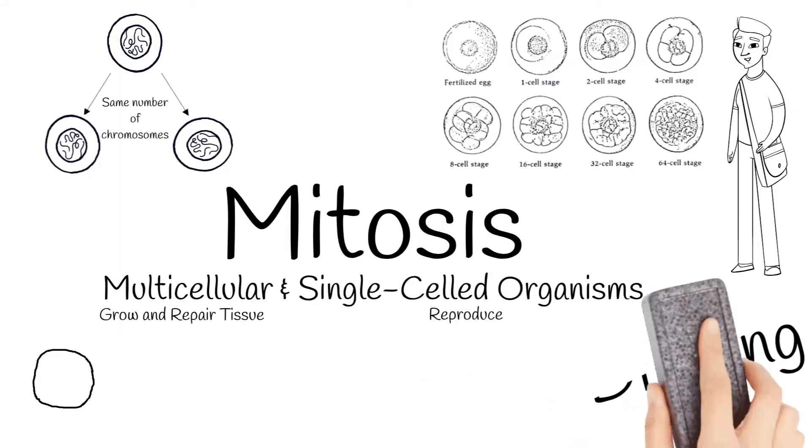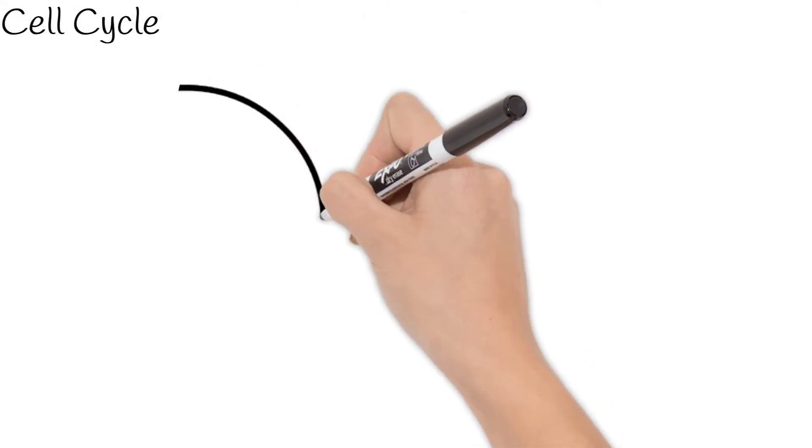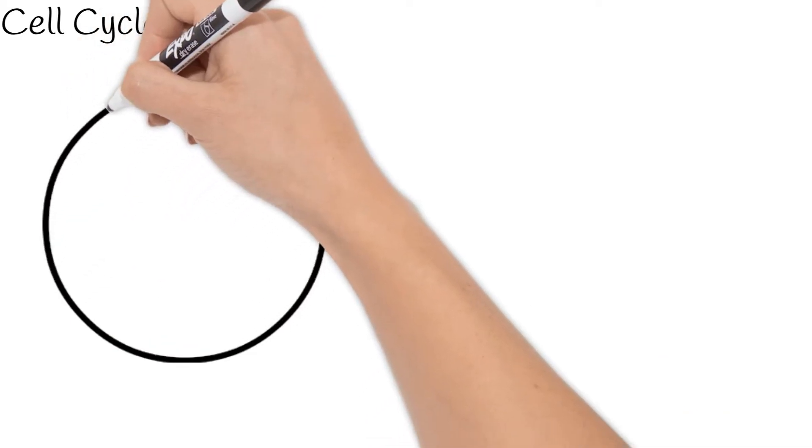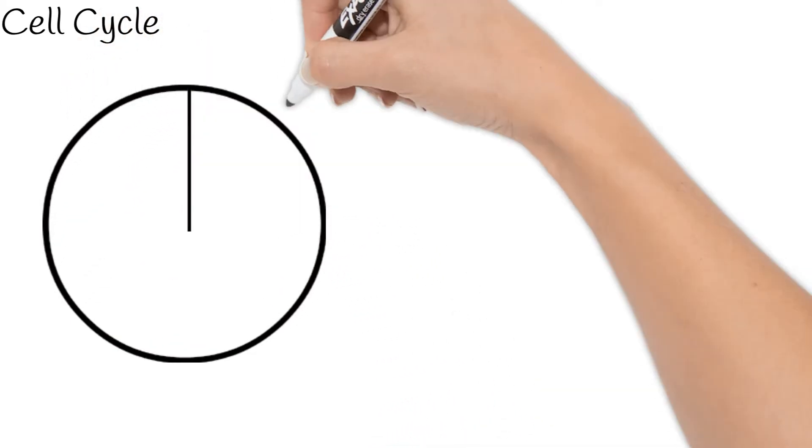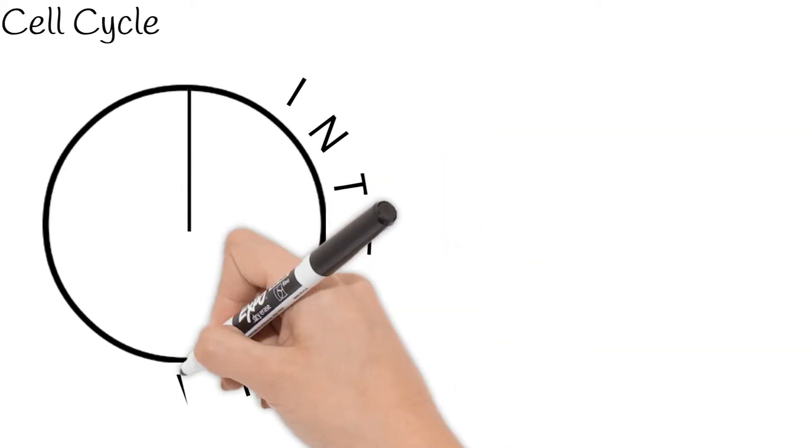Cells go through a cell cycle to divide. As it is a cycle, the cell cycle is usually drawn as a circle. Cells spend the most time in a phase called interphase.